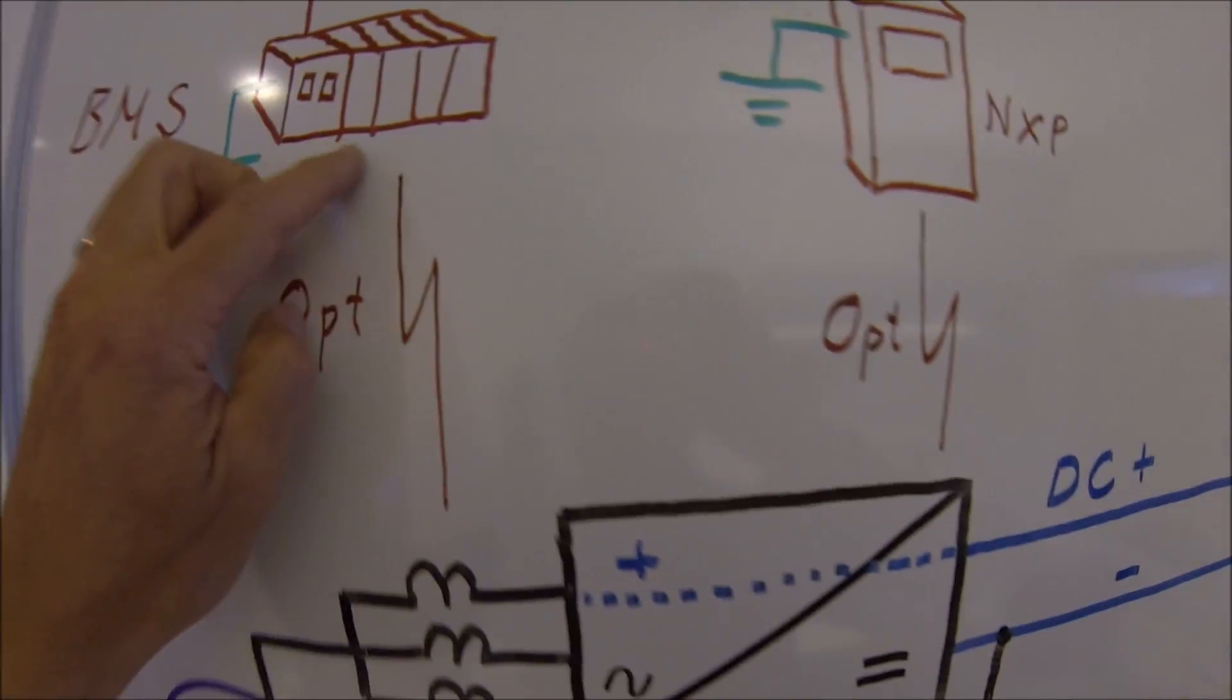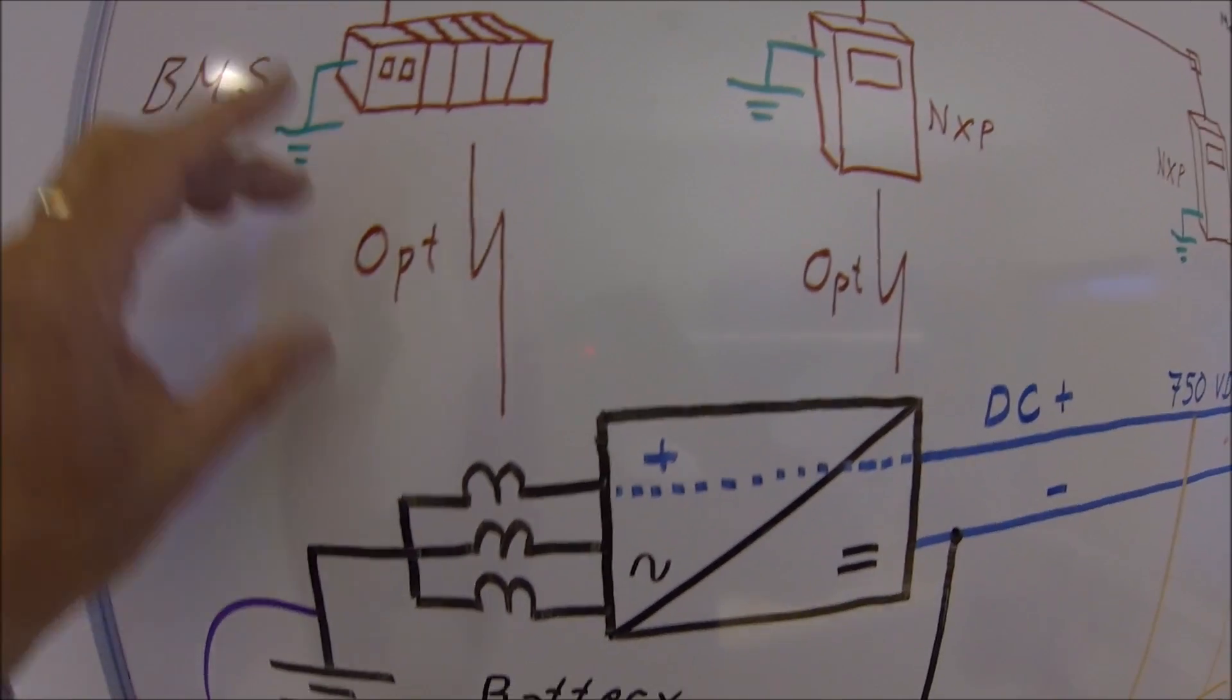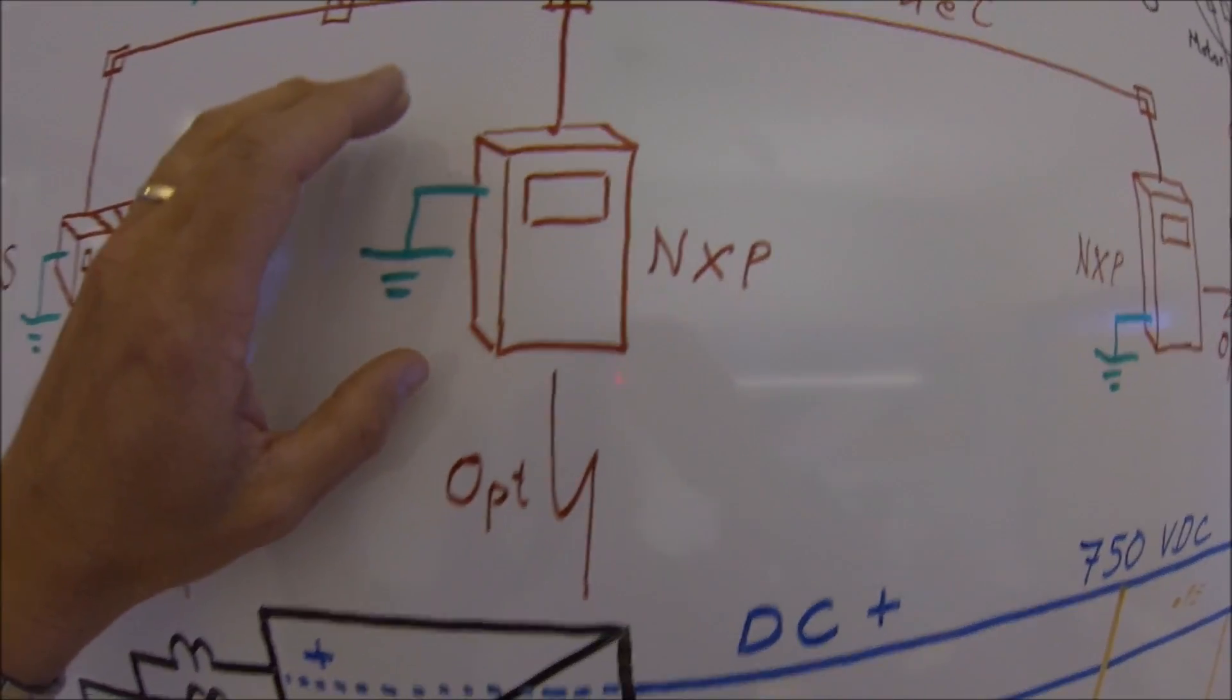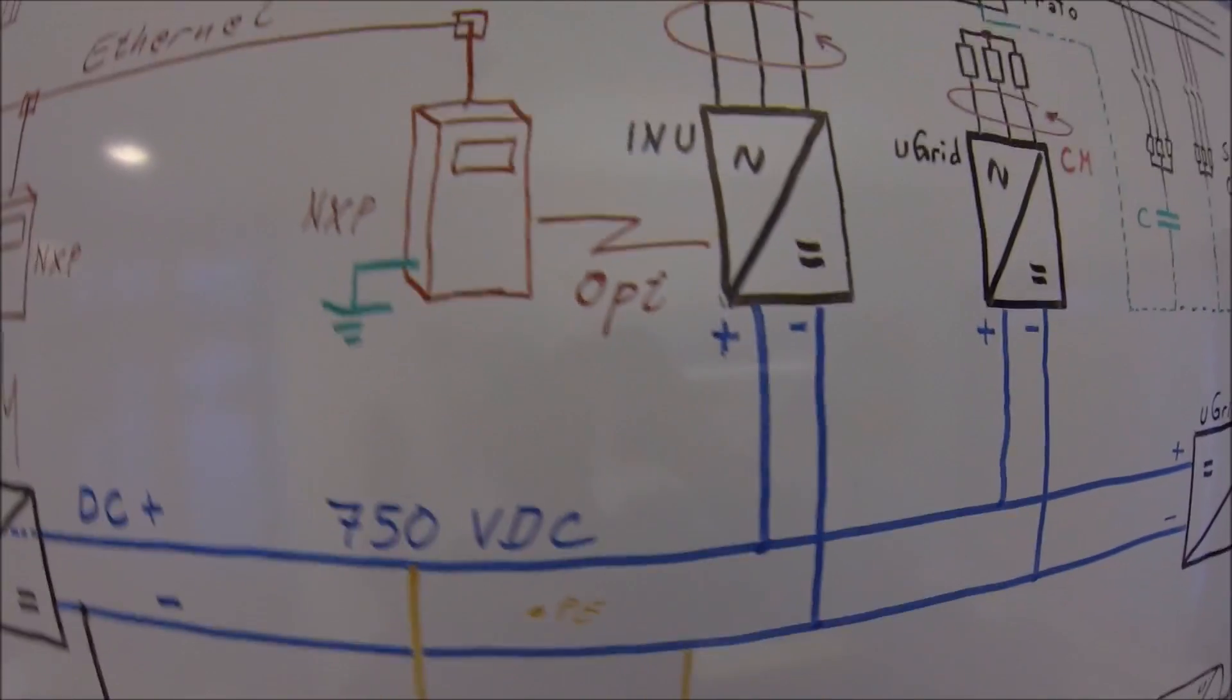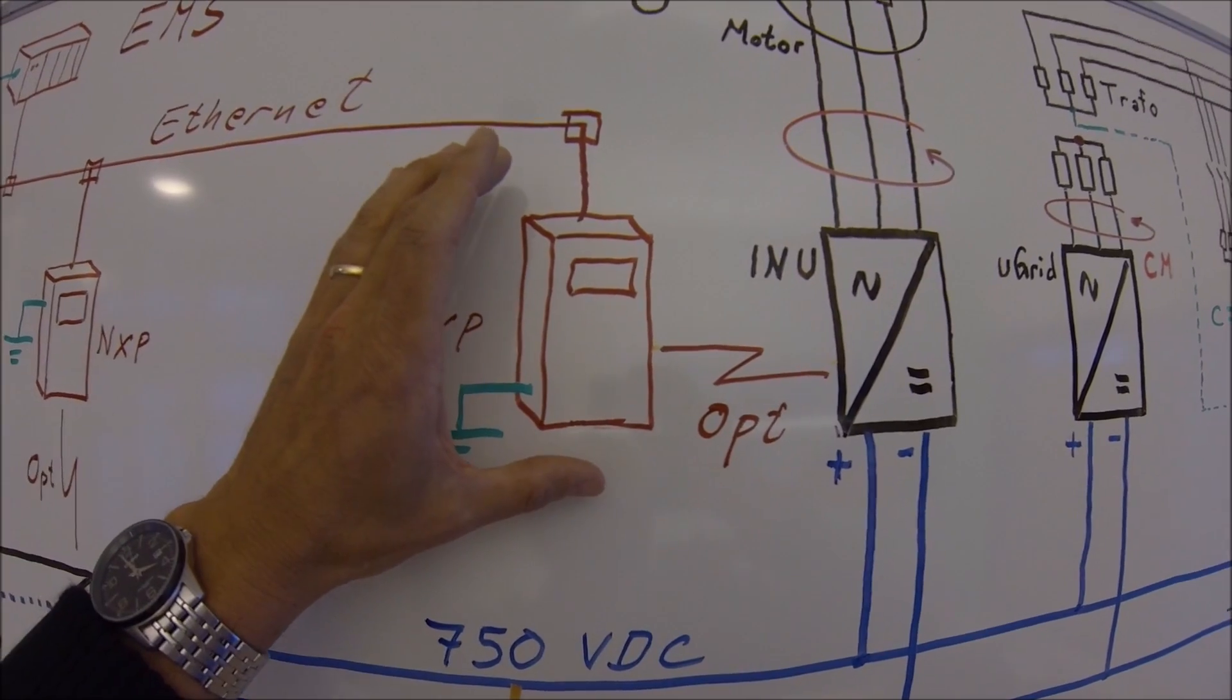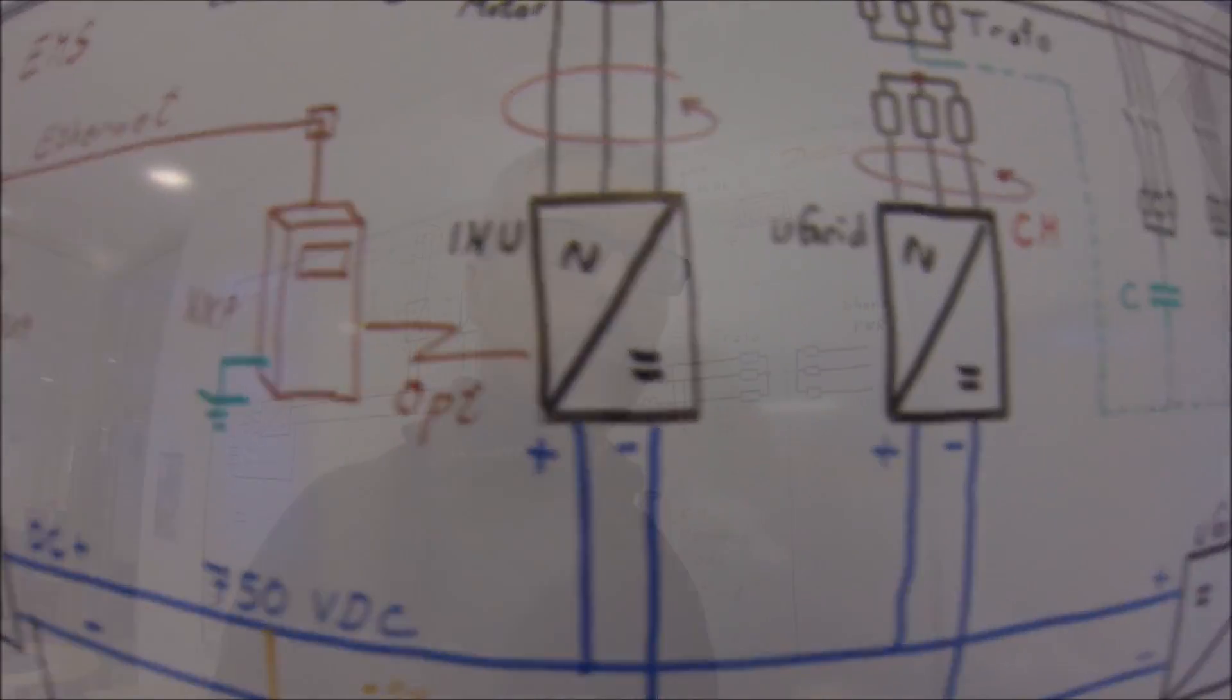You want an optical isolation between these control systems and the battery. Between the NXP control modules and the drives, it is optical fibers. So in this way, you actually don't have a galvanic connection between the control system for the drives and the power modules for the drives.